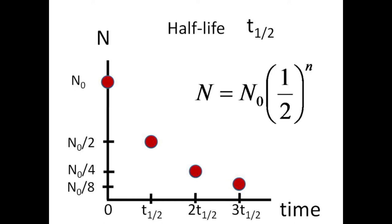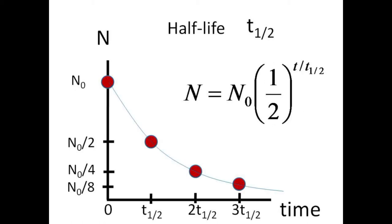This decay of nuclei may be expressed as capital N, the number of radioactive nuclei remaining after little n number of half-lives, equals N0, the original number in the sample, times one-half multiplied by itself little n times. At any intermediate time t, we will have N0 times one-half raised to the ratio t over t one-half.